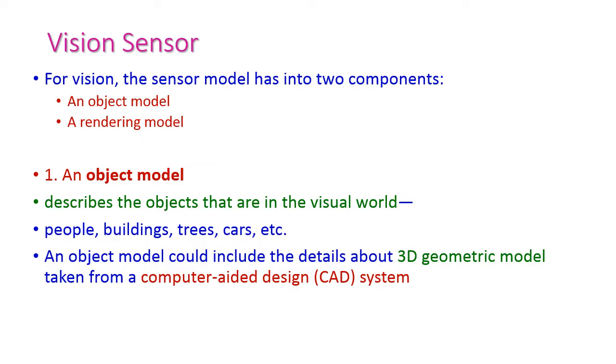The first one is vision sensor. It has two components: first one is an object model, and second one is a rendering model. What is meant by object model? The object model describes objects that are in the visual world. The objects may be people, buildings, trees, cars, etc. It will describe those objects in the environment.